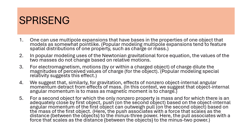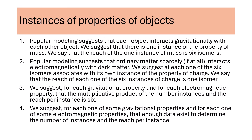This slide recaps some surprising notions regarding gravitational interactions between two objects. Of note is the notion that for two adequately close together objects, gravitational dipole repulsion, or push, can exceed gravitational monopole attraction, or pull. Popular modeling suggests that each object interacts gravitationally with each other object. We suggest that there is one instance of the property of mass, and the reach of that one instance of mass is six isomers. Popular modeling suggests that ordinary matter scarcely, if at all, interacts electromagnetically with dark matter. We suggest that each of the six isomers associates with its own instance of the property of charge, and the reach of each of the six instances of charge is one isomer. We suggest, for each gravitational property and each electromagnetic property, that the multiplicative product of the number of instances and the reach per instance is six.